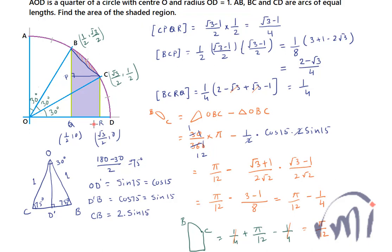Interestingly, the area of triangle OBC equals the area of quadrilateral BCRQ, both being 1/4. Tanika Chalam had sent a solution using calculus, but I used concepts already covered on this channel. If you have an interesting problem to share, send it to us and I'll make a video. Thanks for watching Mathsmat!